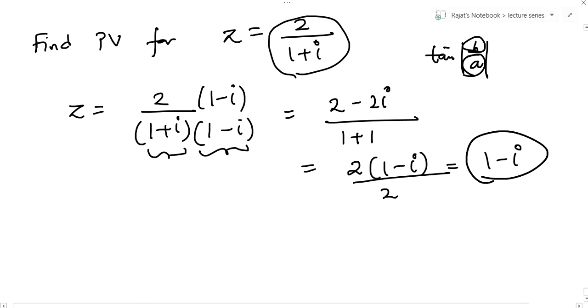Now this is a standard complex number. Tell me, b is negative and a is positive, so what is the quadrant? If b is negative and a is positive, then this is the fourth quadrant.